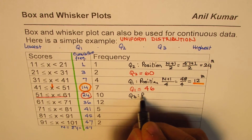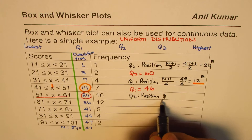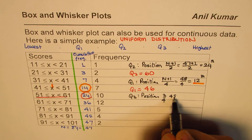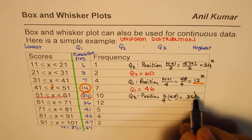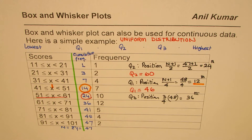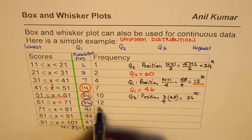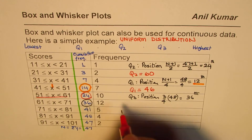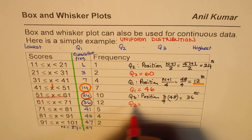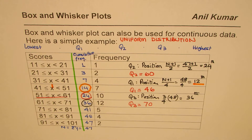For Q3, the position is 3(n+1)/4 = 3×48/4 = 36th position. The cumulative frequency of 36 falls exactly at the edge of the interval 61 to 71 (not including 71), which has 12 elements. Since 36 is at the edge, we take Q3 = 70 — the highest value in that interval.